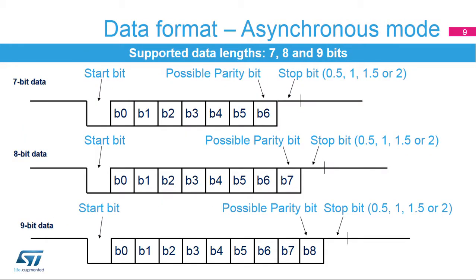The frame format used in asynchronous mode consists of a set of data bits in addition to bits for synchronization and optionally a parity bit for error checking. The USART supports 7-, 8-, or 9-bit data lengths. A frame starts with 1 start bit where the line is driven low for 1 bit period, signaling the start of a frame for synchronization. The start bit is followed by 7-, 8-, or 9 data bits. If parity control is enabled, the parity bit is transmitted as the last data bit and is included in the data length count. Finally, a number of stop bits — 0, 1, 1.5, or 2 — where the line is driven high, end the frame.